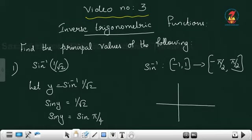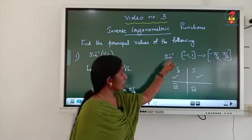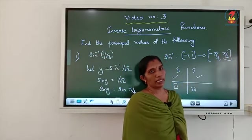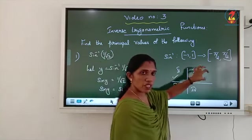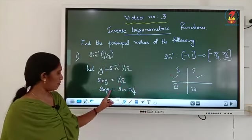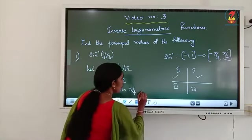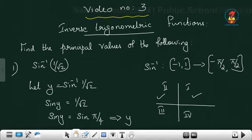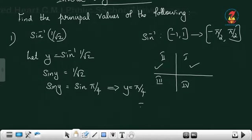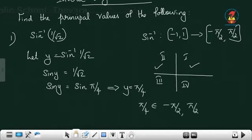The sine function is positive here for 1 by root 2 — in the first quadrant, second quadrant, third quadrant, fourth. Sine is positive in first and second. But we cannot take the value from the second quadrant since the range is minus 90 to 90. So we have to take the value from the first quadrant, that is 45 degrees or pi by 4. So sine y equals sine pi by 4, which implies y equals pi by 4. Is pi by 4 in that range? Yes, this 45 belongs to the closed interval [-90, 90]. So this answer is correct: y equals pi by 4.